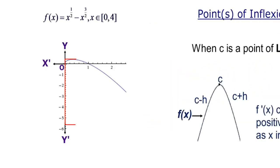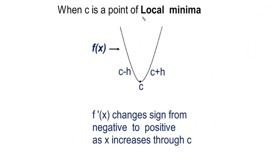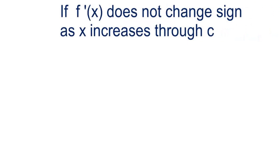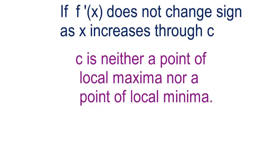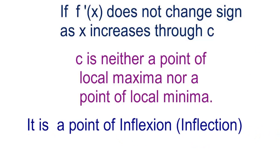Now we will move on to points of inflection. When c is a point of local maxima, f'(x) changes sign from positive to negative as x increases through c. When c is a point of local minima, f'(x) changes sign from negative to positive. But if f'(x) does not change sign — that is, on both sides it is positive or both sides it is negative — then we say that c is neither a point of local maxima nor a point of local minima, but we call this a point of inflection. Note that both spellings — inflection and inflexion — are acceptable.